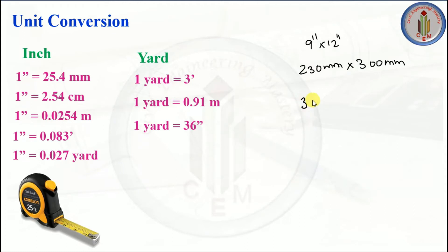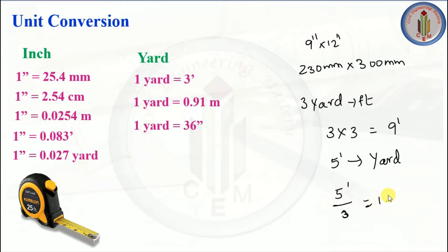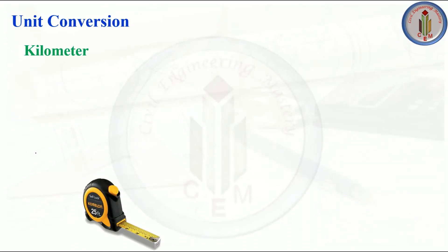1 yard equals 3 feet, 0.91 meter, and 36 inches. Example: 3 yards to feet — 3 × 3 = 9 feet (bigger to smaller, multiply). 5 feet to yards — 5 ÷ 3 = 1.6 yard (smaller to bigger, divide).